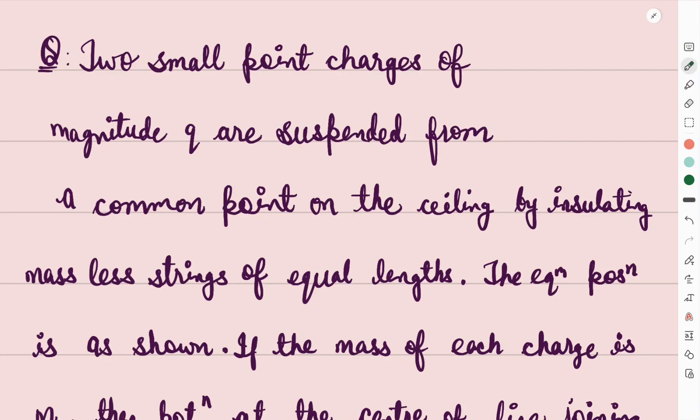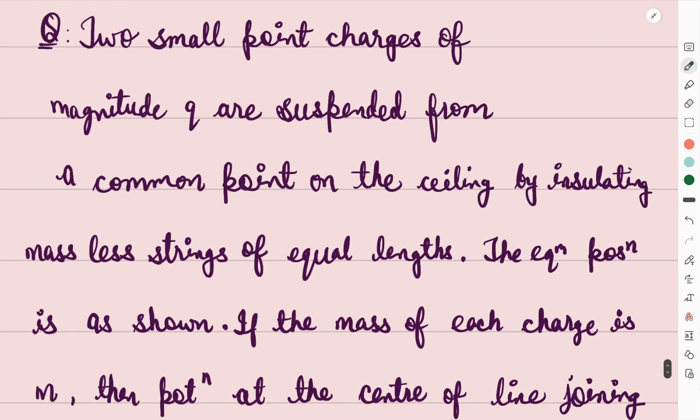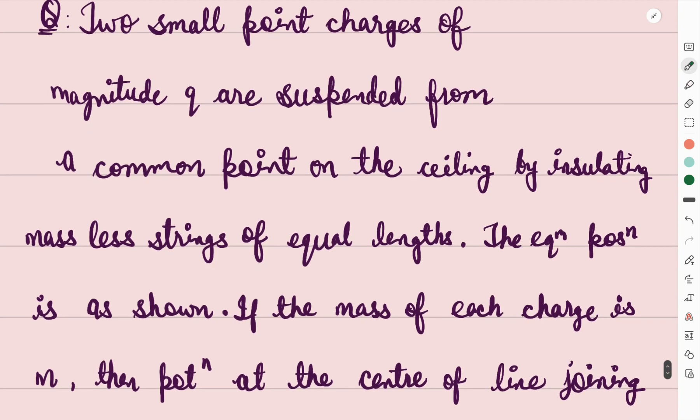Hello everyone, welcome to my YouTube channel Physics Queen - Learn Physics in the Easiest Way. So a practice question here: Two small point charges of magnitude q are suspended from a common point on the ceiling by insulating massless strings of equal lengths. The length given is l, charge is q, and mass of each object is m.